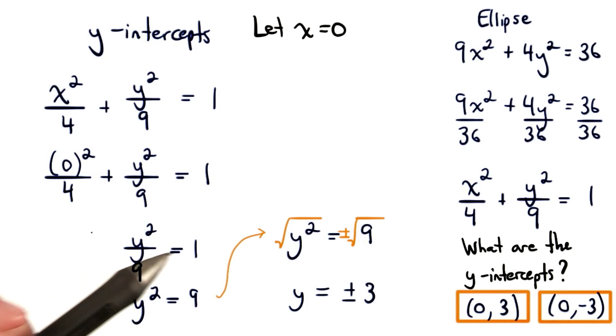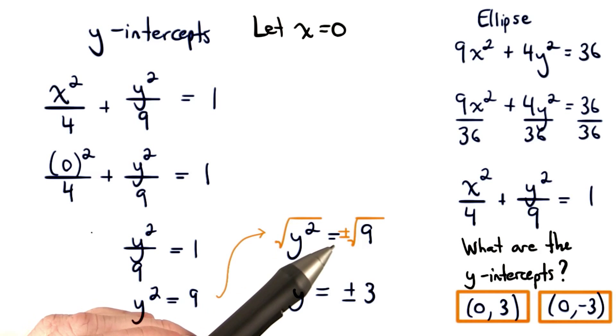We'll multiply both sides of the equation by 9 to get y squared equals 9, and then we'll take the square root of both sides using plus or minus to get y is equal to plus or minus 3.